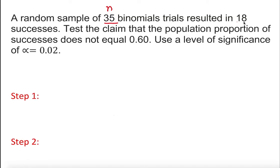Clearly, 18 is x. The claim is about the population proportion, so we are doing a one-proportion z-test. The alternative is that success does not equal 60 percent, so phi is equal to 0.60, and we know alpha.